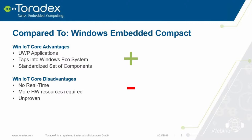The advantages of Windows IoT Core over Windows CE: you can have universal applications — one application that runs on desktop, mobile phone, embedded device, even Xbox. That's definitely a really big advantage. You can tap into the Windows ecosystem: all the Azure stuff works, the development environment, most libraries work. Even frameworks like the Unity Gaming Framework — we just tested that and you can integrate it with Windows IoT Core. You can download it and it just works.